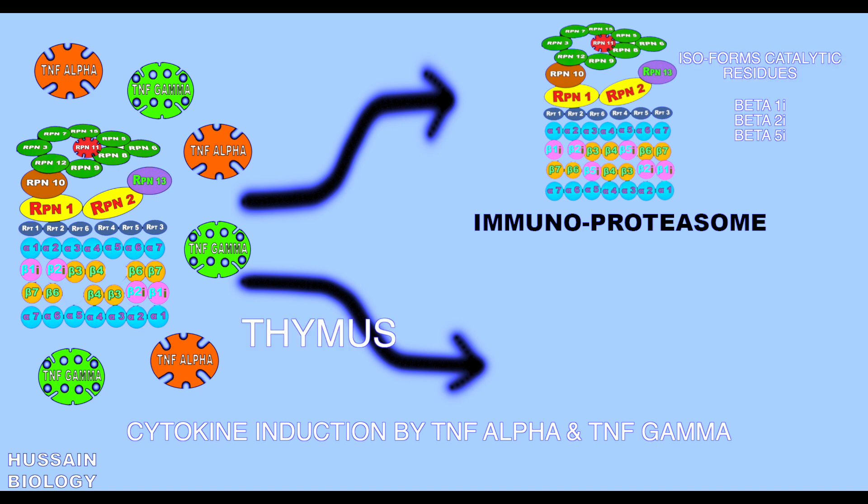We get isoforms in the form of beta 1i, beta 2i, and beta 5t. So there is a little bit of difference here. The beta 5t is different from immunoproteosome, and that makes it the thymoproteosome.